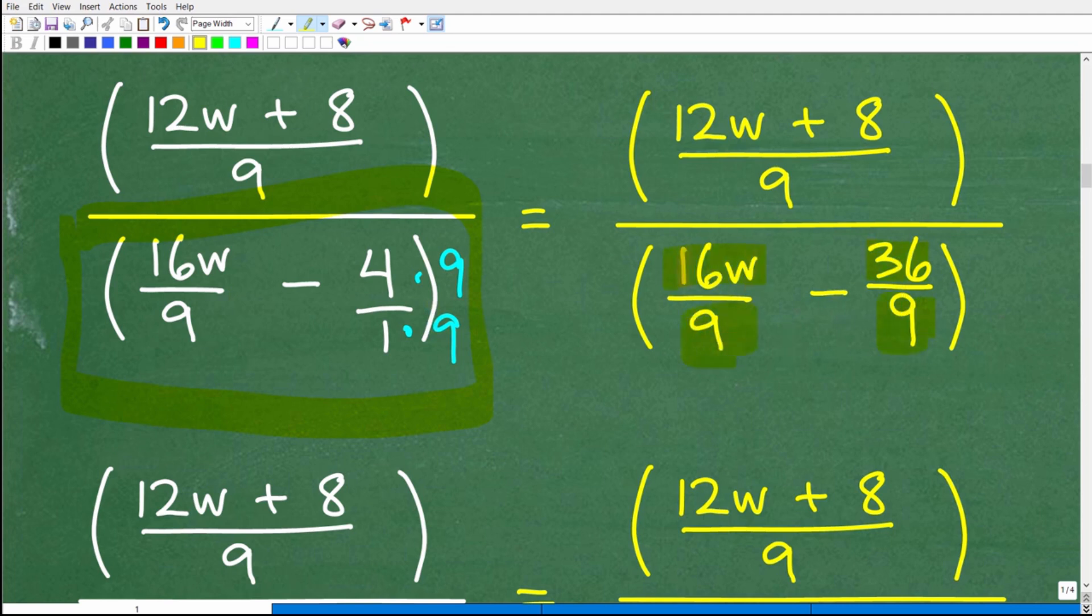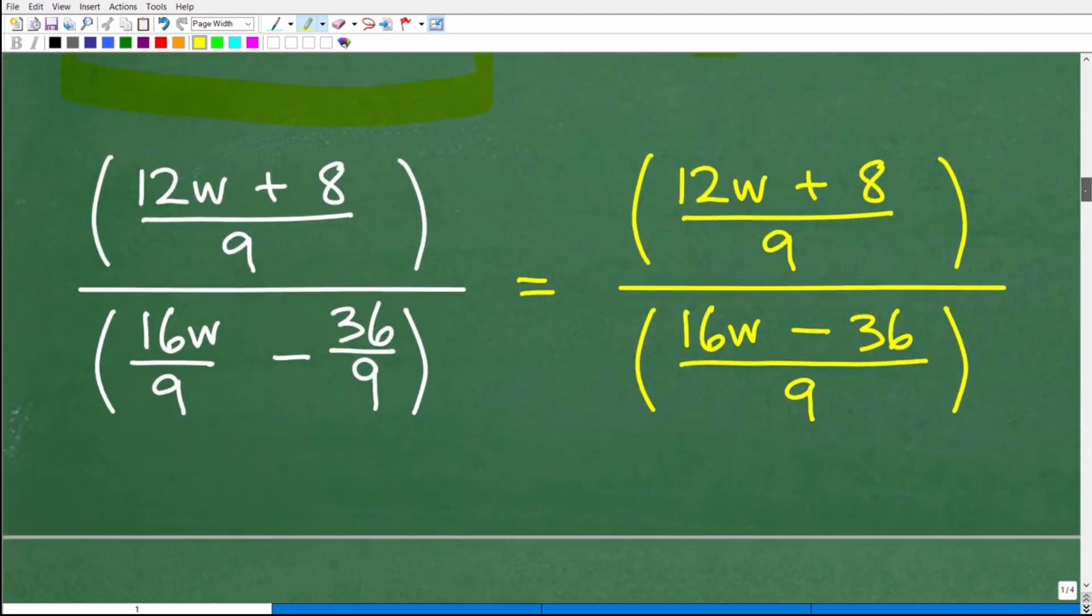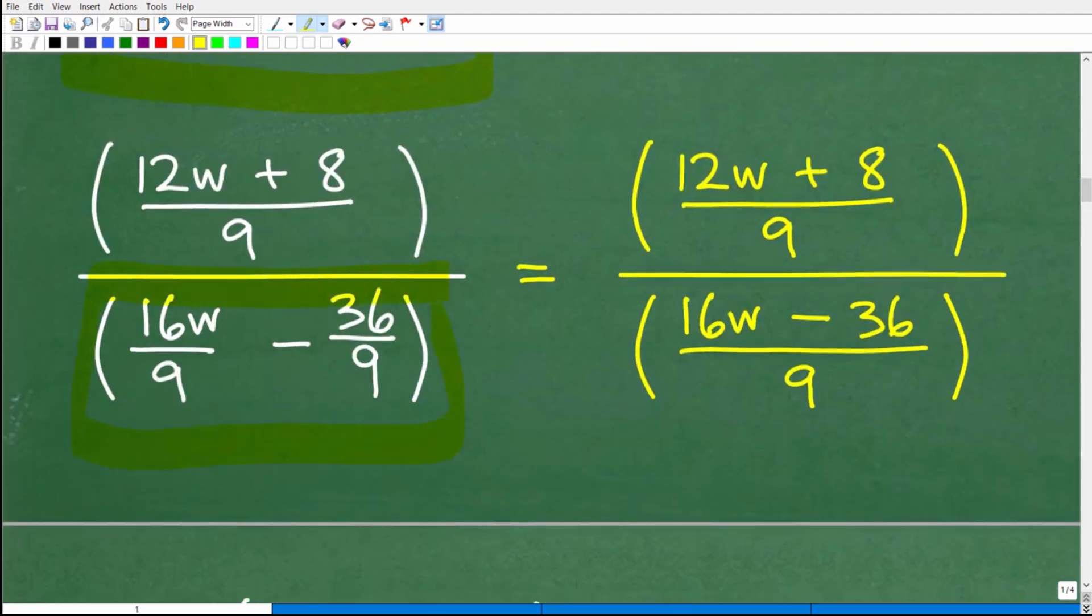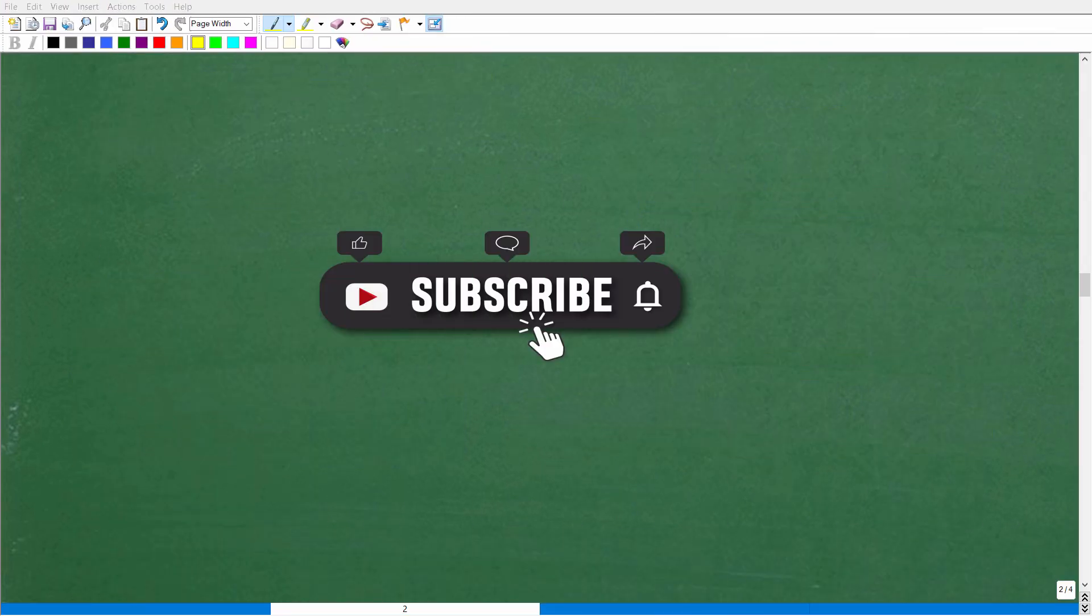So we have 16w over nine minus 36 over nine. Same denominators, so now I need to just subtract the numerators. This is going to be 16w minus 36 over nine. So we cleaned up both the numerator expression and the denominator.